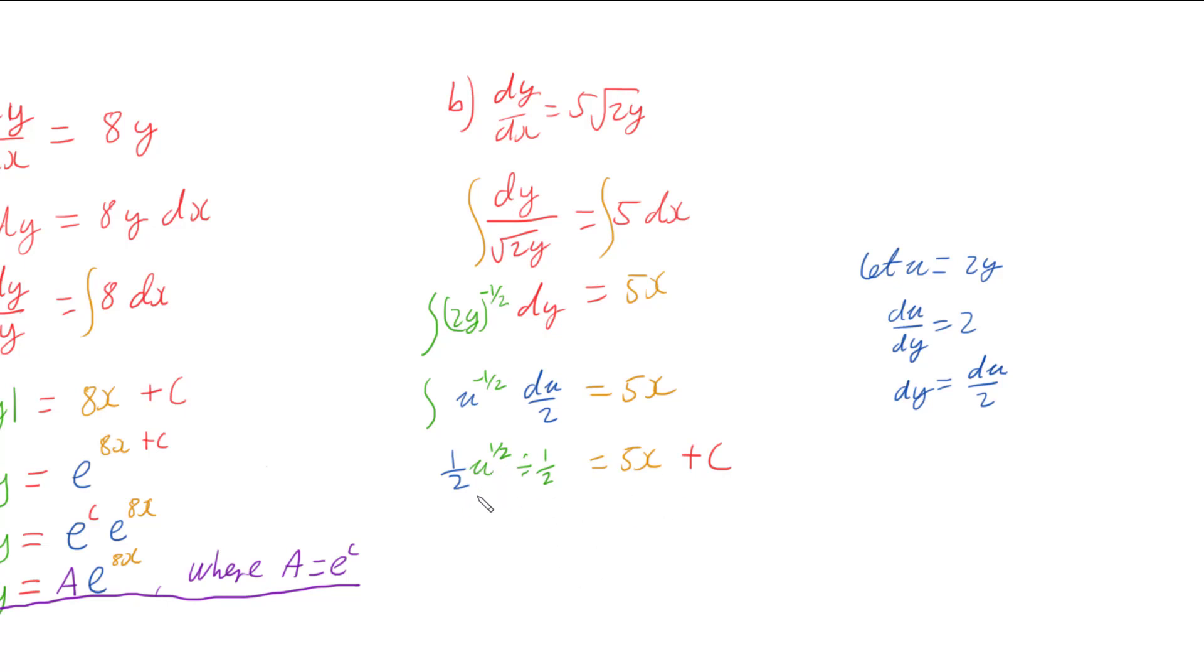Tidying this up, well the half times u to the half, this divide by a half becomes multiplied by 2, and so a half and our 2 cancel out. And we've got the 5x plus c over here.